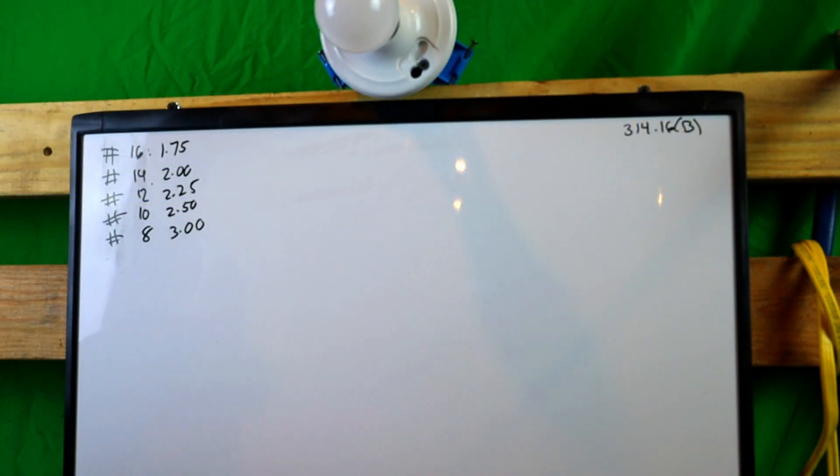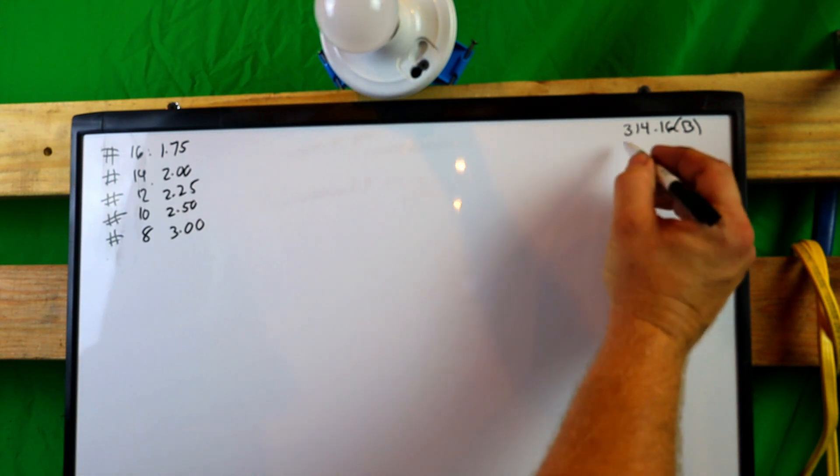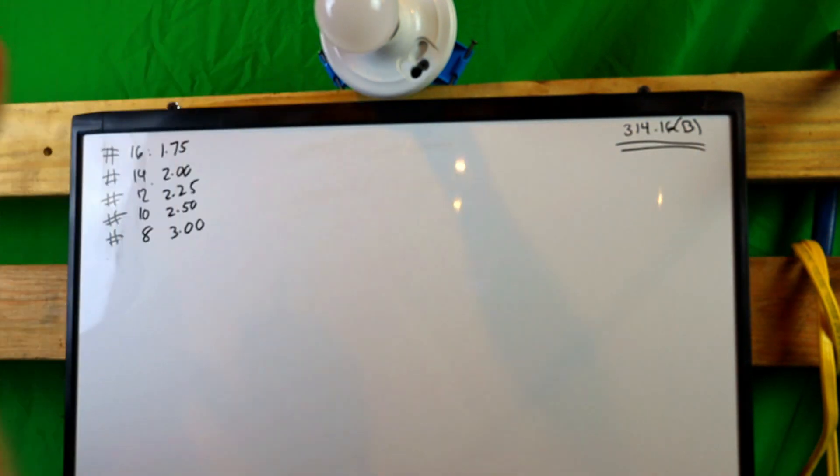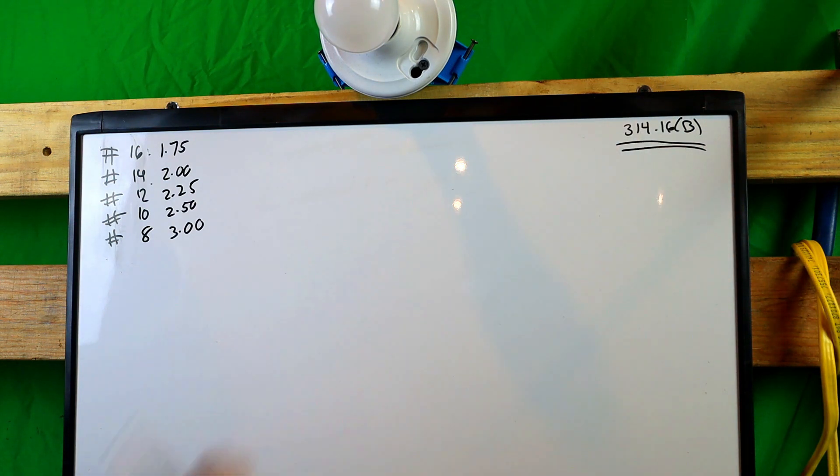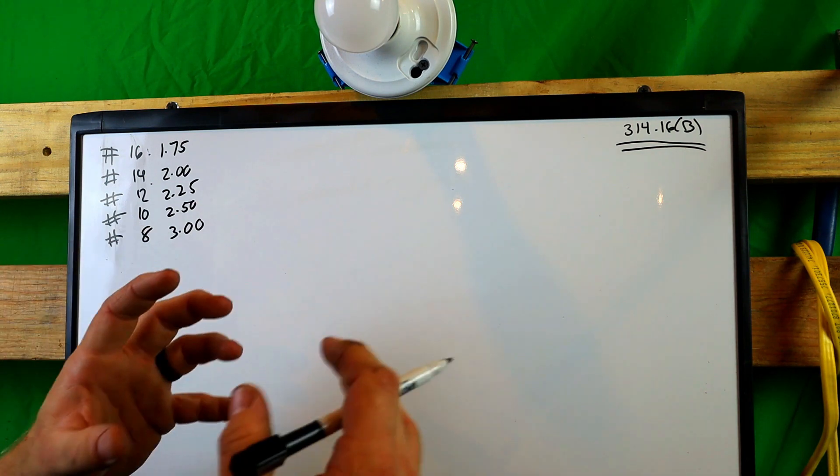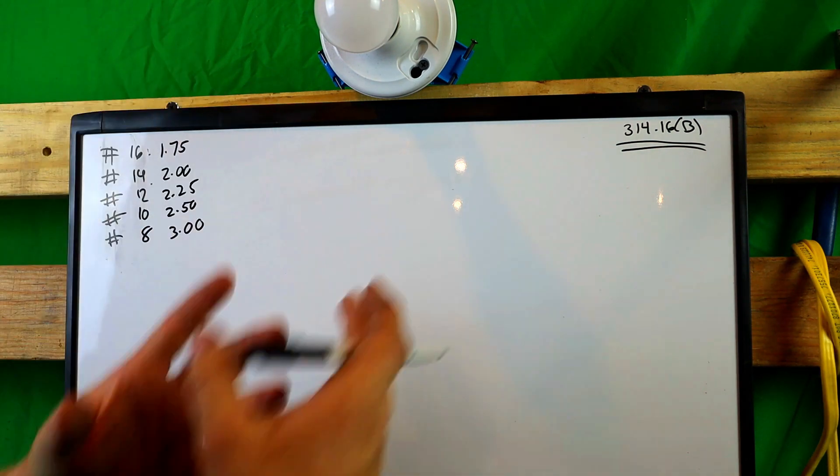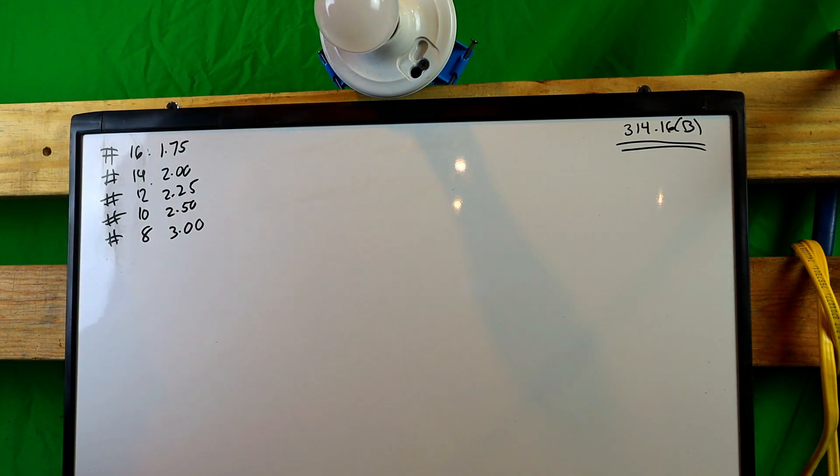Alright. So first of all, let's start out by saying that right here is the code that you need to go in your code book and look at. So you guys can follow along if you need to. It's 314.16B. That's where you need to find this at. It's super easy. It's in there. I'm going to try to make this so even a two-year-old can understand.